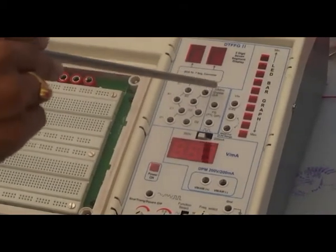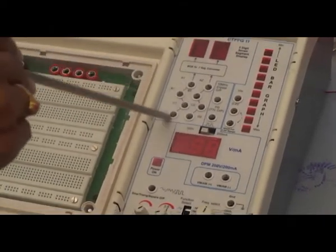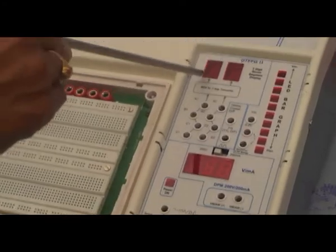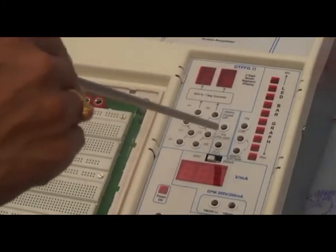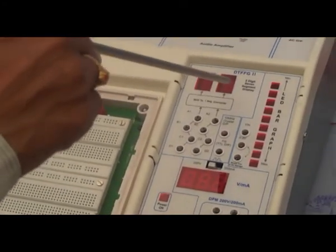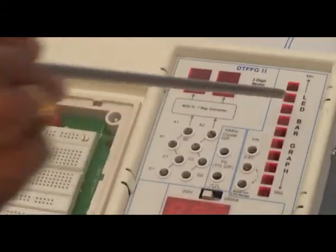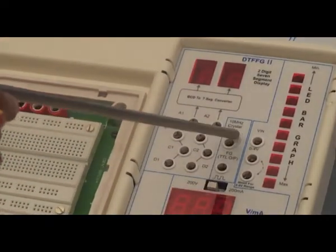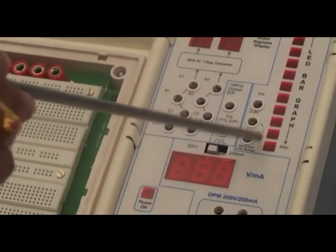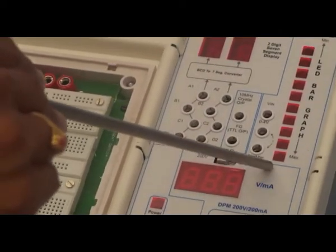This is 2 seven segment, BCD to 7 segment: A1, B1, C1. D is the left side 7 segment display. This is LED bar graph. It is 0 to 4 volt. If it is short, it will come to 2.5 volt range.